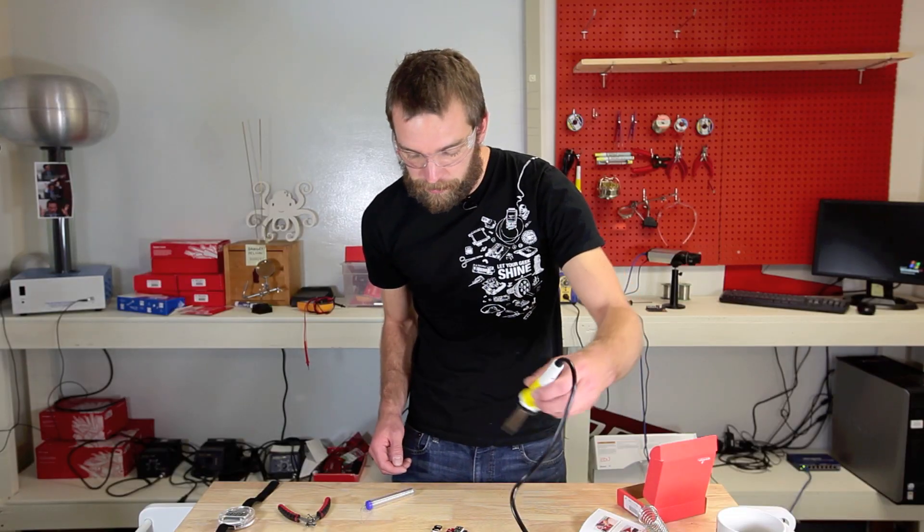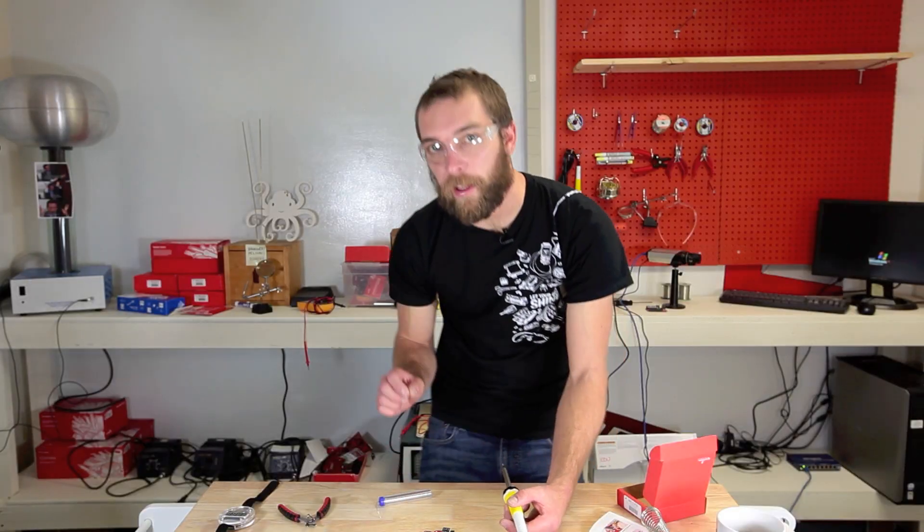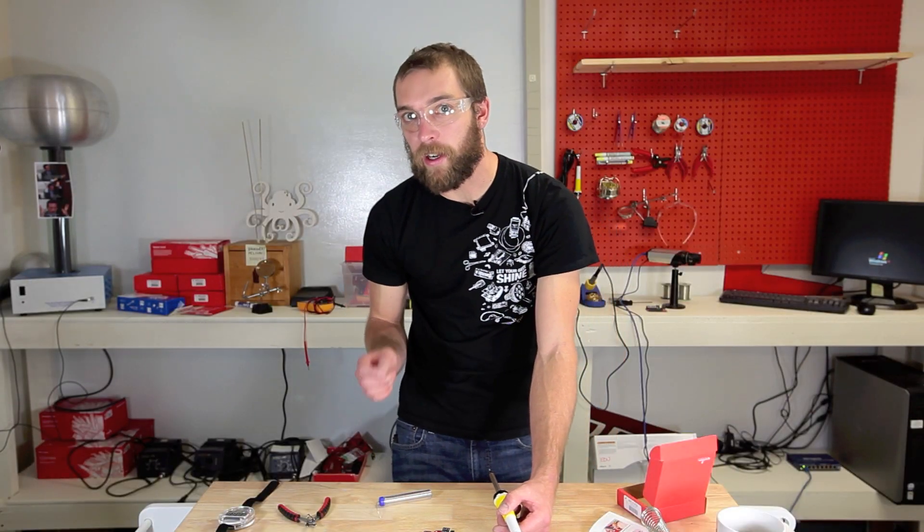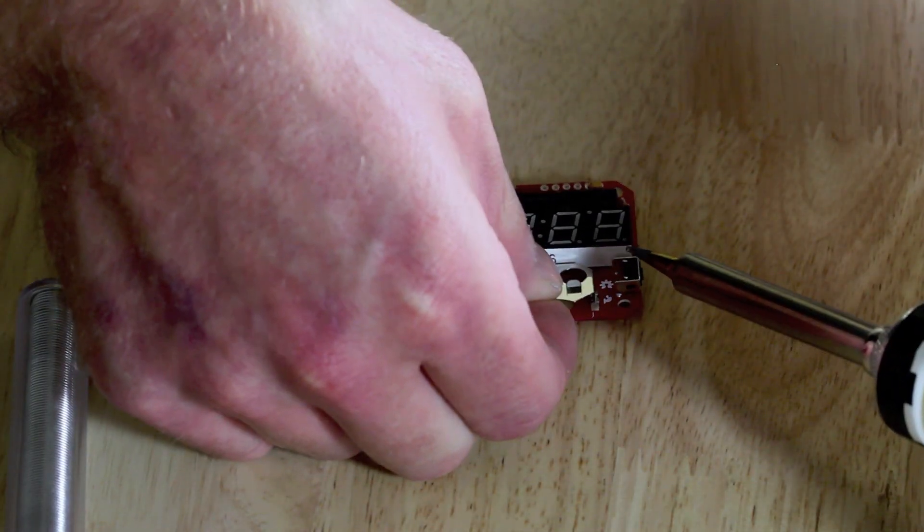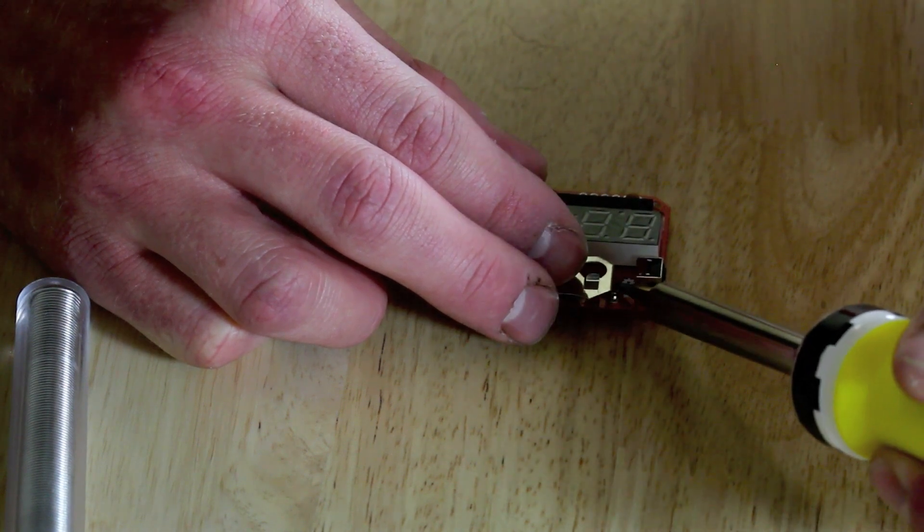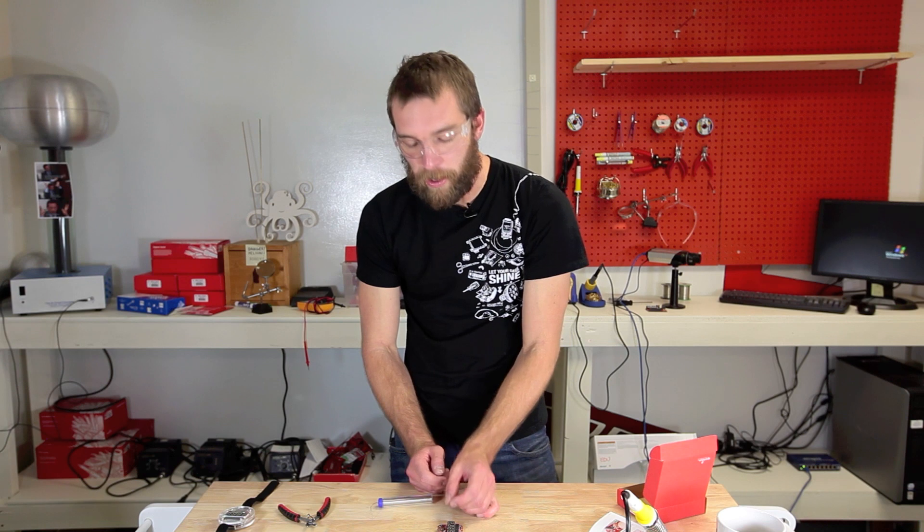We're going to first start by putting a dab of solder on the top right pad here on the board. Now make sure you get the alignment of the battery holder correct, it's very vital. If you have it in backwards, you're not going to be able to stick the battery in and you're not going to be able to have it work as a watch. So I'm just going to place the battery holder, see if I can hold the soldering iron on top of the pad, with your luck, it will be held in place.